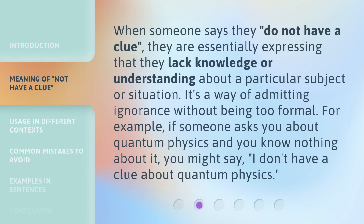When someone says they do not have a clue, they are essentially expressing that they lack knowledge or understanding about a particular subject or situation. It's a way of admitting ignorance without being too formal. For example, if someone asks you about quantum physics and you know nothing about it, you might say, 'I don't have a clue about quantum physics.'